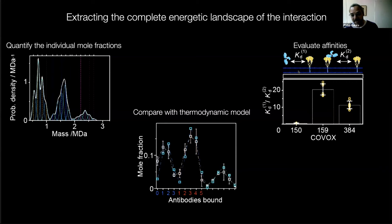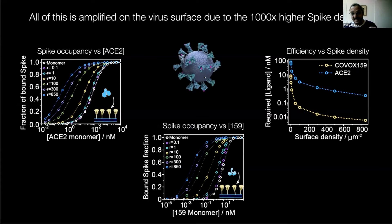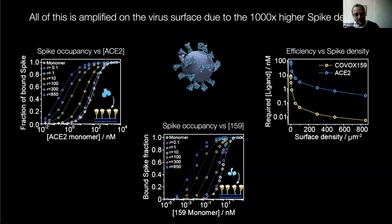Antibody 150, a relatively poor antibody, has very poor cross-linking. Antibody 159 doesn't even bind but has very strong cross-linking. Antibody 384, the very best one, both binds to the right domain and cross-links. Once you have these affinities you can take it one step further: the density of spike proteins on the virus is about a thousand times higher than in our experiments. A calculation of how density affects binding tightness shows that at the density of the virus surface with these multivalent interactions you get about two orders of magnitude enhancement in binding.